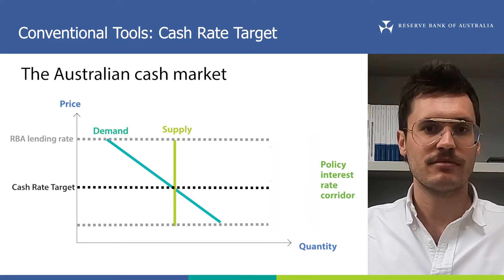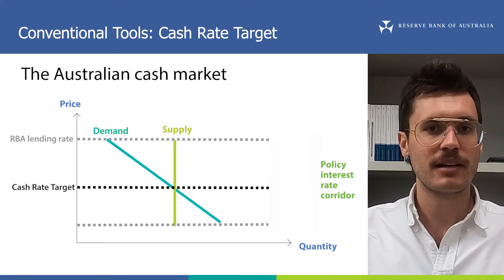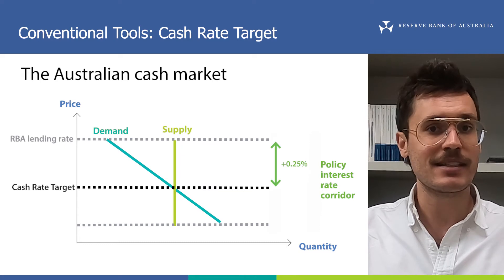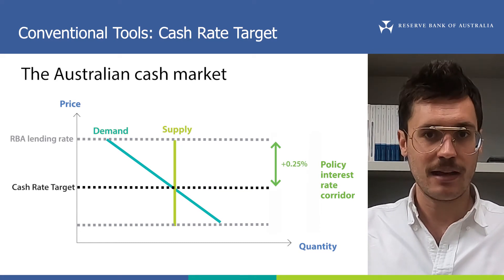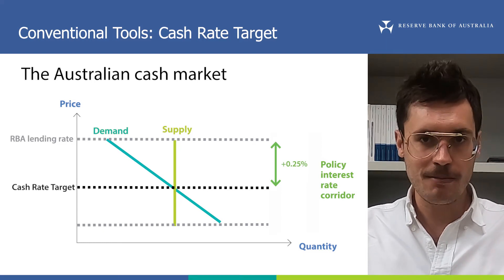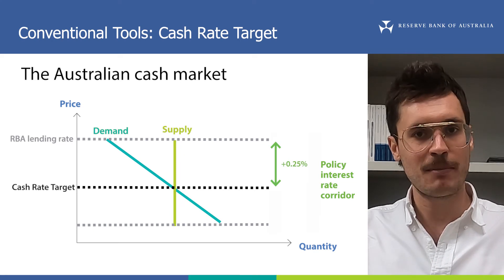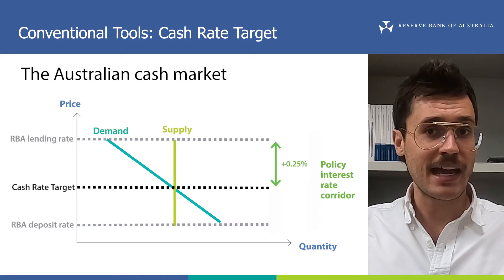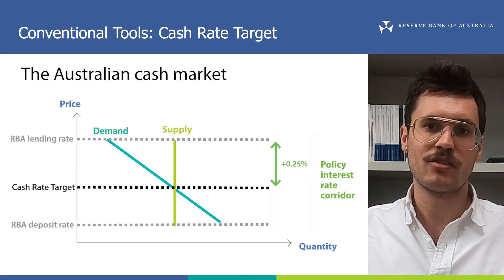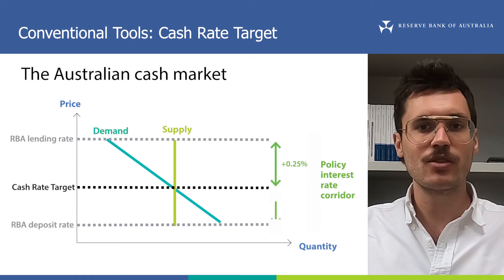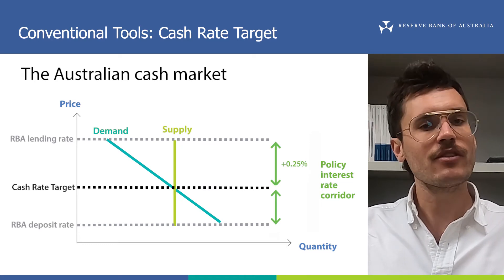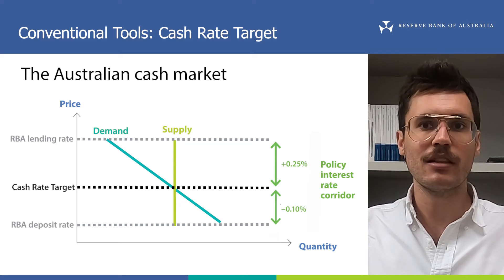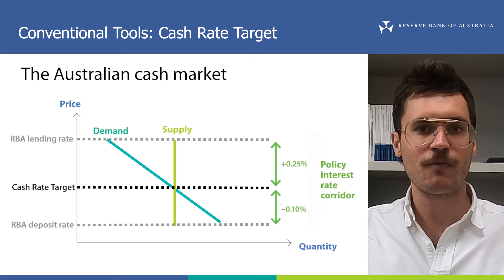Above is the RBA lending rate, the rate at which banks can borrow cash for use as ES balances overnight from the RBA instead of from another bank. The lending rate is always 0.25% above the cash rate target, and it changes as the cash rate target does. Banks have no incentive to borrow from another bank at interest rates higher than the RBA's lending rate, because it would always be cheaper to borrow from the RBA. This means there are no transactions above this ceiling of the corridor. On the flip side, below the cash rate target is the RBA deposit rate, the rate at which banks can deposit cash as ES balances at the RBA. This also changes alongside the target for the cash rate. In the past, the deposit rate was always 0.25% below the cash rate target, but because of the record low level of the cash rate, it's now only 0.1% below the target.